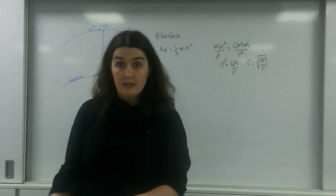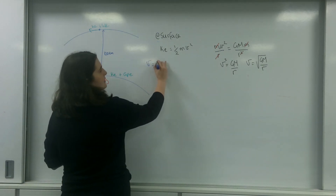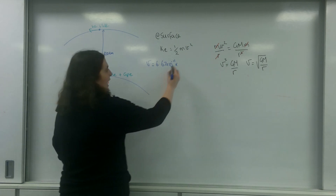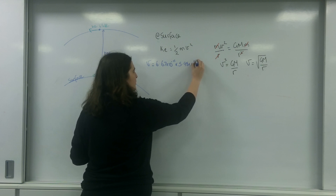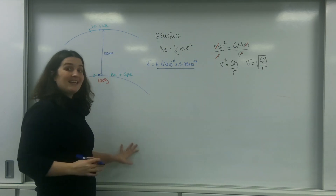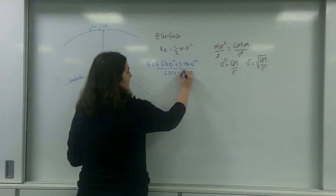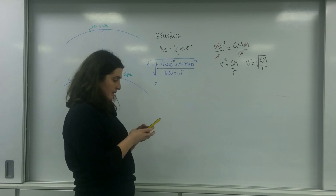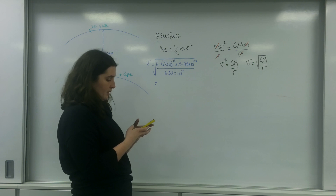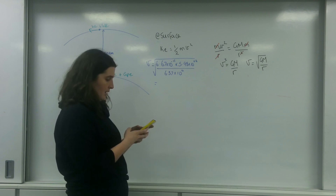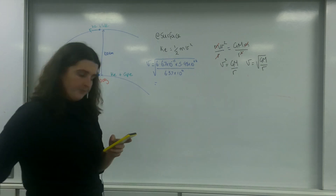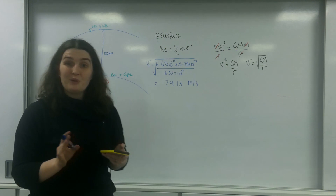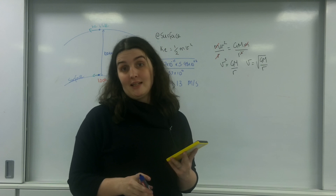I'm going to work out my orbital velocity first. v equals the square root of (6.67 × 10⁻¹¹ times the mass of the Earth, which is 5.98 × 10²⁴, all over r, which is the radius of the Earth, 6.37 × 10⁶ metres). I need to square root that, and I get a value of 7,913 metres per second. That does seem fast, but it is correct — you are orbiting at about 7,000 metres per second.